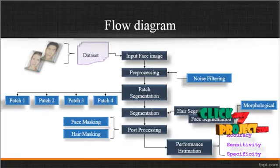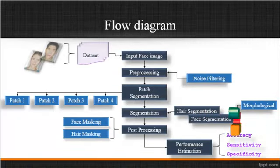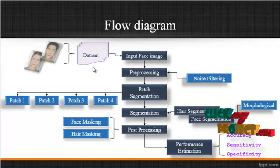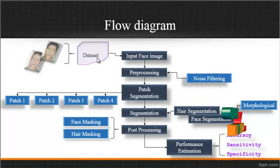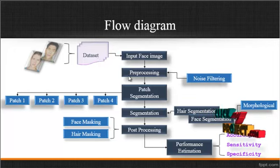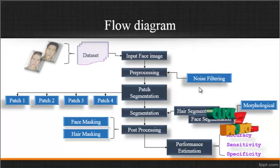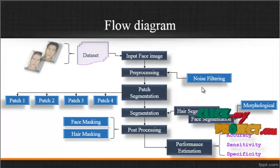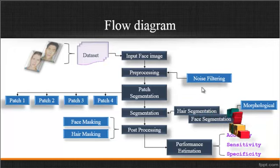Now we are going to discuss about the overall flow diagram of the process. At first, the input face image is taken from the dataset. The dataset is the folder which consists of several input images. After getting the input image from the dataset, the pre-processing is carried out. In this pre-processing step, we have to perform noise filtering to remove the noise present in the image.